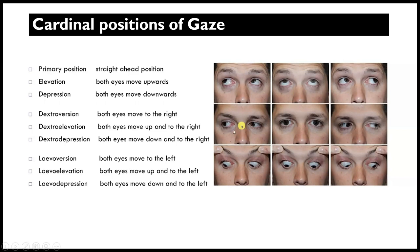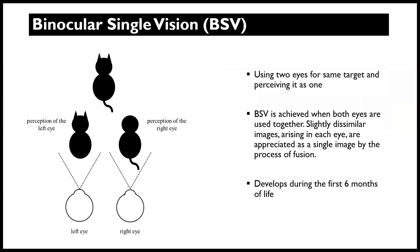Looking at the named versions: both eyes moving to the left is called levoversion, and both eyes moving to the right is called dextroversion. We can also have dextro elevation and levo elevation. These are the primary, secondary, and tertiary positions of gaze.